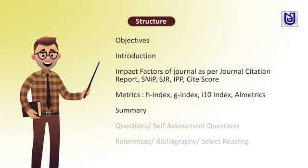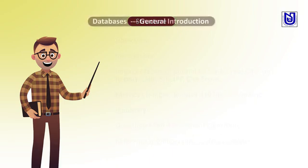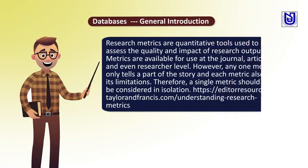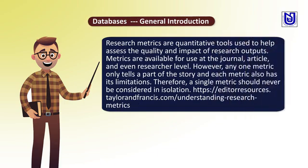You all know how important the Journal Citation Report is for faculty members, because research metrics are quantified. These are quantitative tools used to help assess the quality and impact of research outputs. Metrics are available for use at the journal, article, and researcher level. However, any one metric only tells you a part of the story, and each metric also has its limitations.